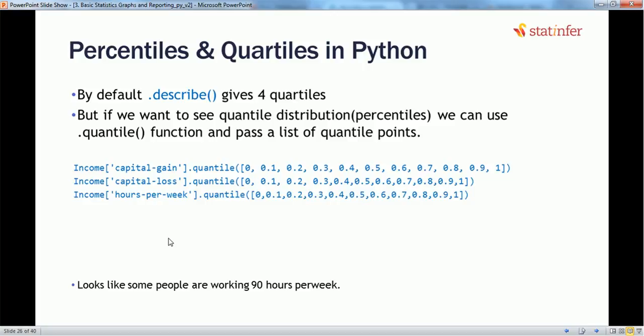Now percentile and quartile in Python. So we have understood percentiles and quartiles. There is one more term called quantile. Quantile and percentile are similar. Percentiles can be divided into a hundred parts, but the quantile values are 10 values, like 0, 10, 20, 30. So if you want to find the quantile, we can use dot quantile, or for percentile we can also use quantile function. But the basic function describe, which is equivalent to summary function from R, gives a basic four quantile. How it works in Python, we will try to see now.